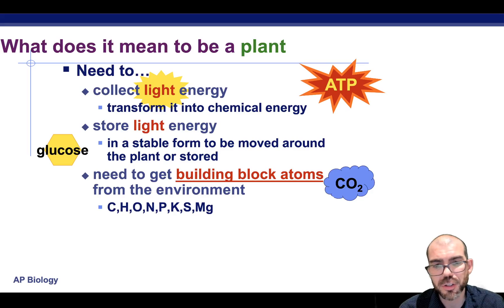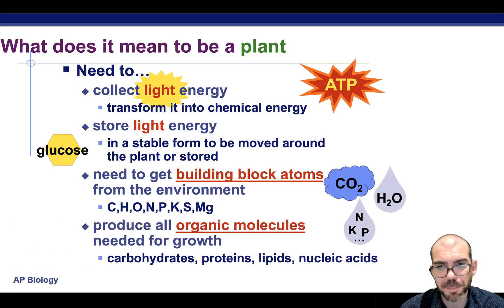Plants need a source of carbon, hydrogen, oxygen, nitrogen, phosphorus, and potassium. They need these organic molecules in order to grow. They need to be able to make carbs, proteins, lipids, and nucleic acids.